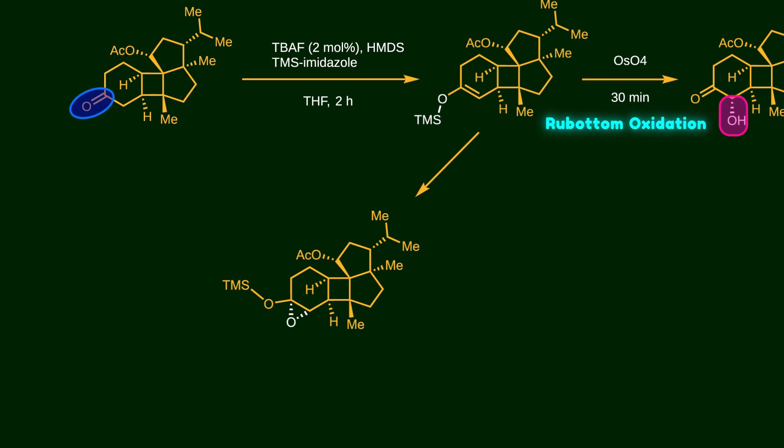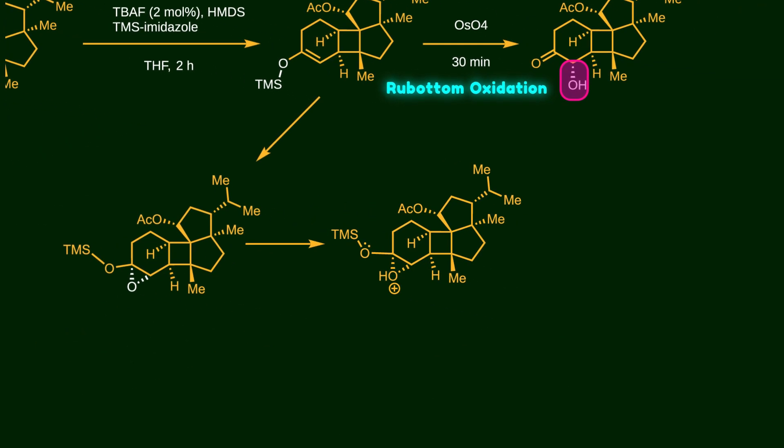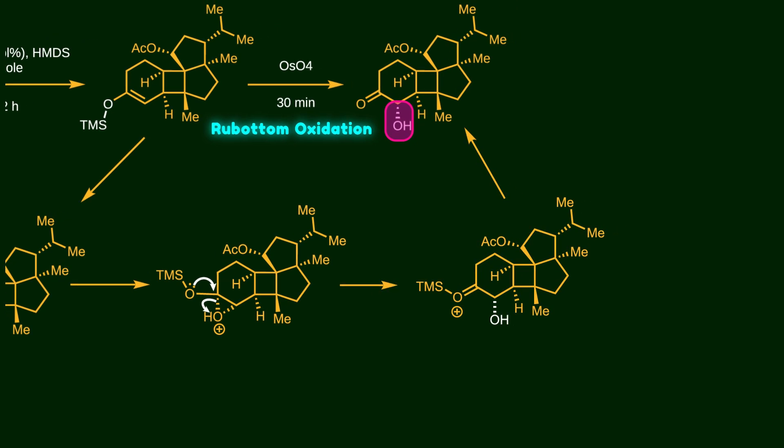First, the double bond undergoes epoxidation with osmium tetroxide. Then the oxygen of the epoxide ring is protonated. Next, the non-bonding electrons of the oxygen atom shift the carbon-oxygen bond, causing the ring to open and creating a carbon-oxygen double bond. At this point, the desired hydroxy group is correctly installed at the alpha position.